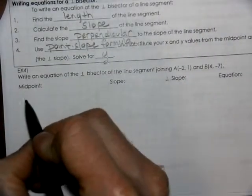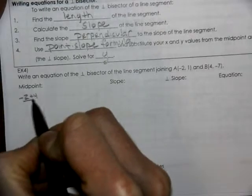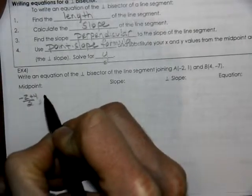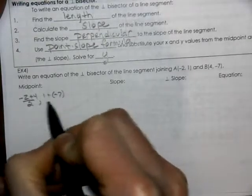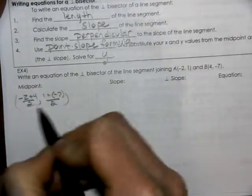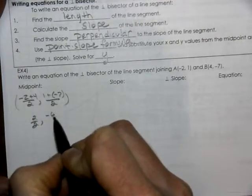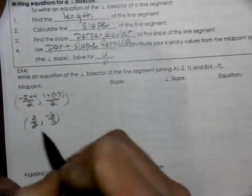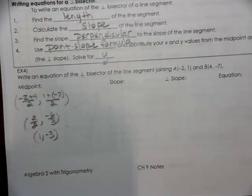So to find the midpoint we take our two x values and add them together, take your two y values and add them together. So that's our midpoint.